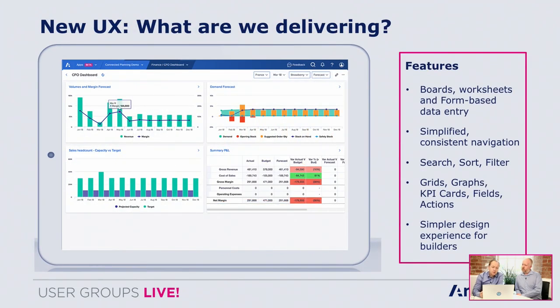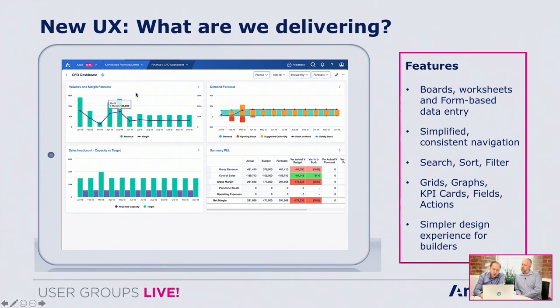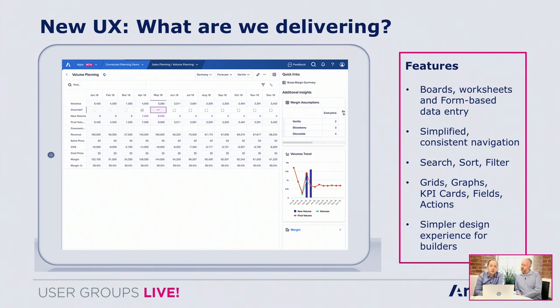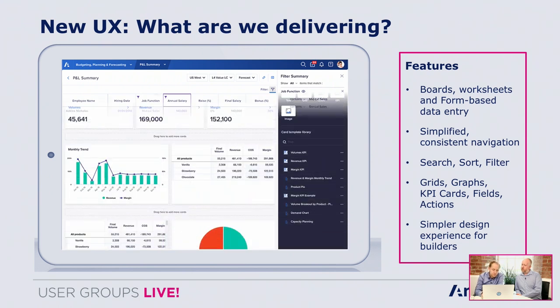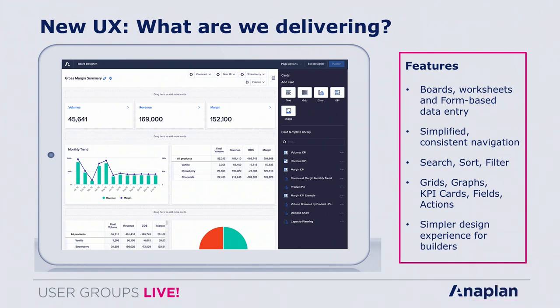The new UX web interface is made up of two different types of pages. The first is a board page — more like a traditional dashboard where you might have your high-level KPIs or SLAs. You can drill down from one of these cards into a worksheet where you do more detailed analysis and planning, such as filtering your grid or sorting. We've also simplified the design experience so there's more consistency across different cards, allowing it to work better on different screen resolutions and devices.